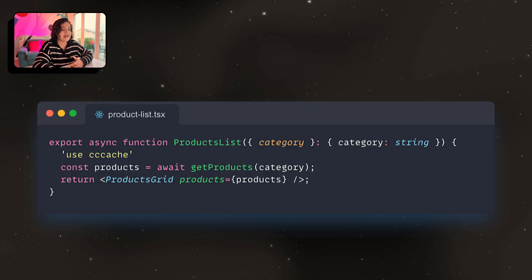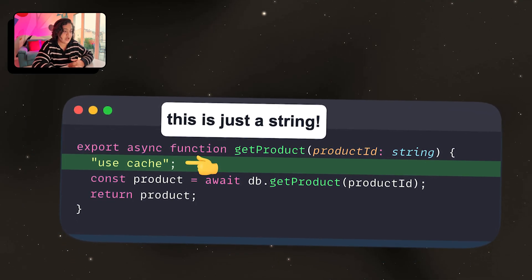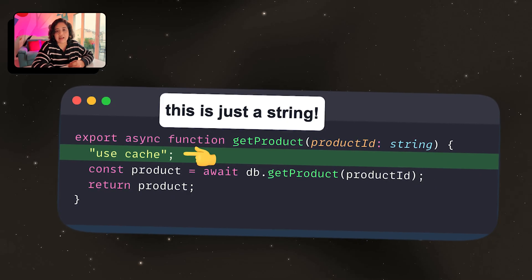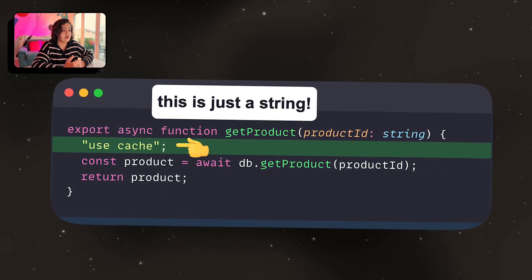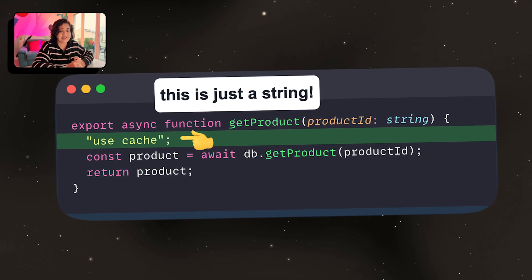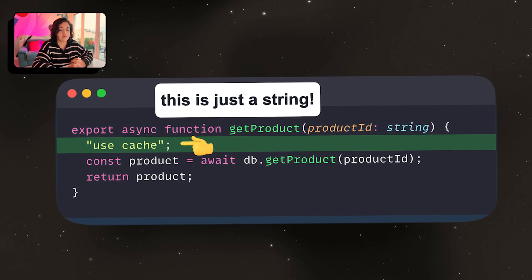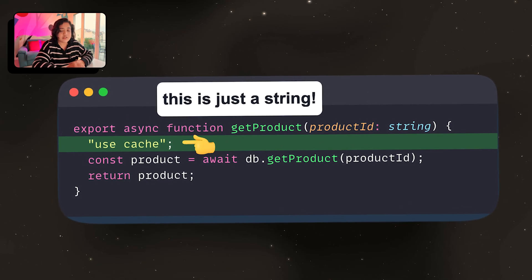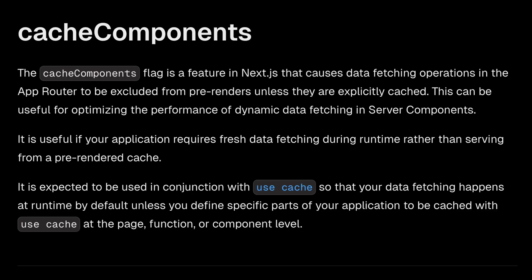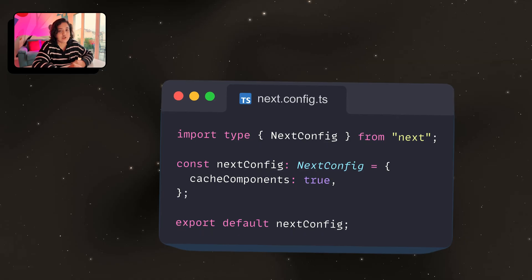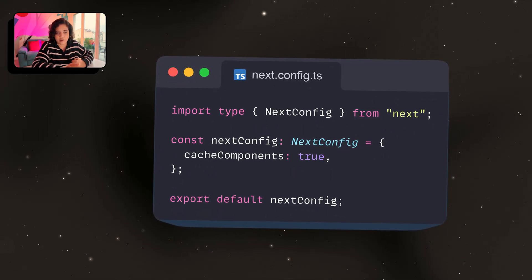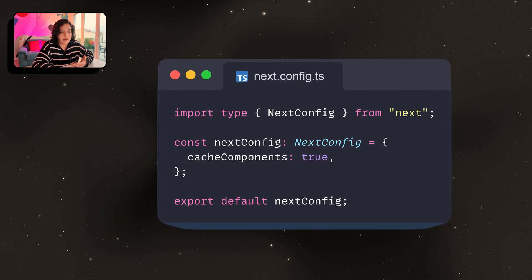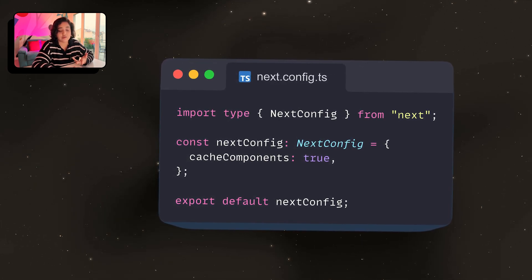Tanner's point is that these magical strings feel fragile. You can't easily extend or validate them through the type system, and they lean heavily on build-time conventions rather than explicit runtime contracts. But here's what 'use cache' actually does — it isn't just a gimmick. It's part of cache components, a new opt-in feature that lets you cache either a page component or a function. Think of it as React.memo, but on the server.